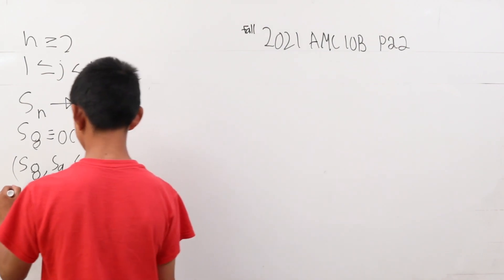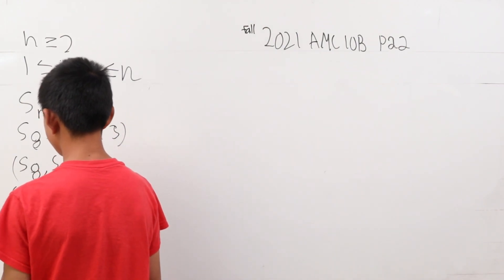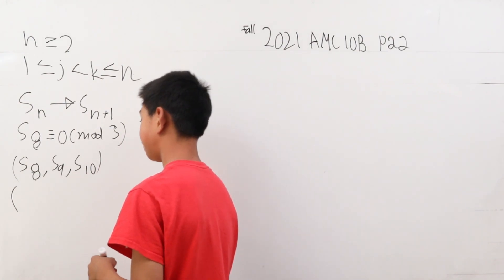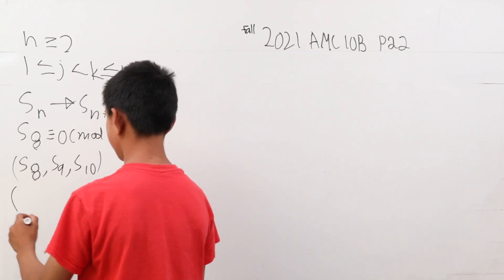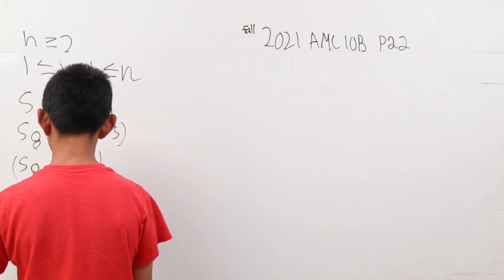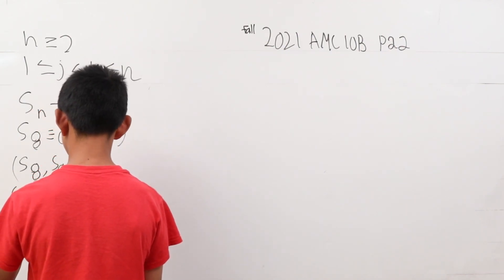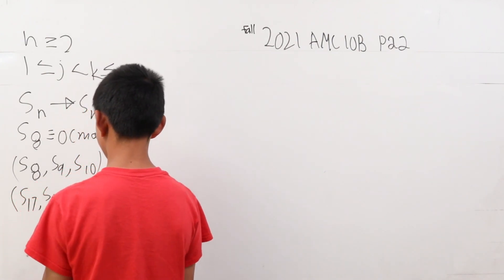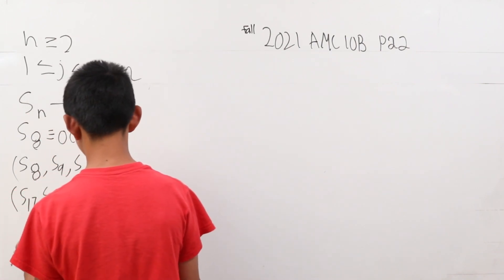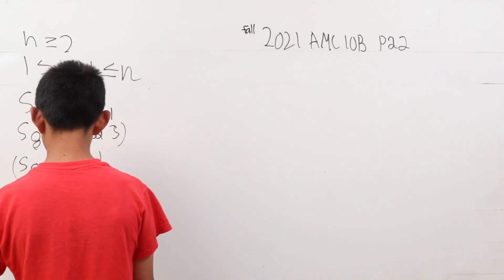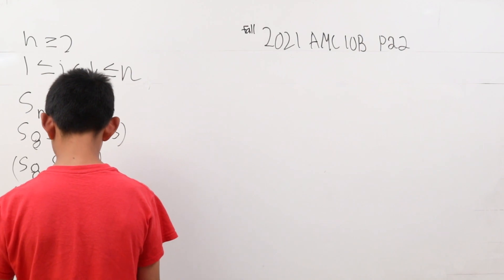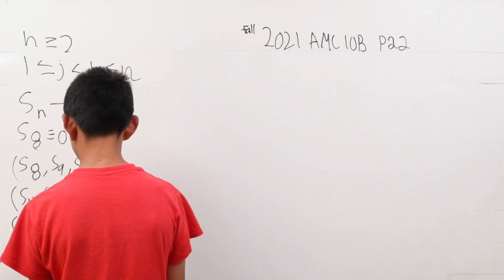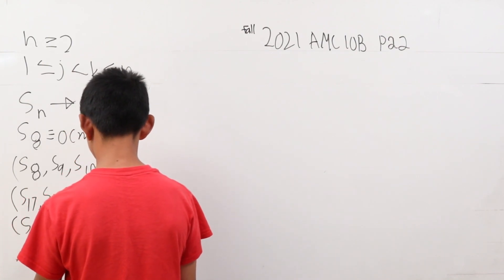The second three, we just have to increase by 9 because it's a cycle. This is s of 17, s of 18, s of 19. Then, the third sequence is going to be s of 26, s of 27, s of 28.